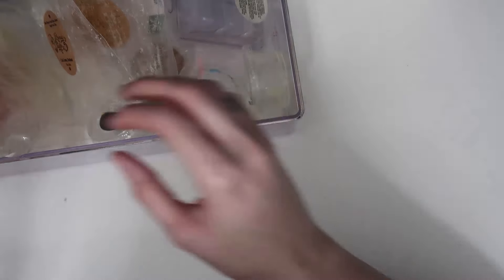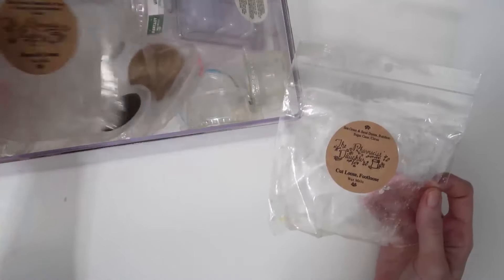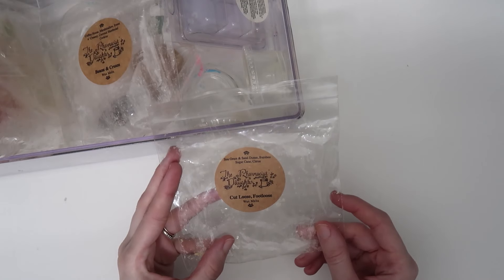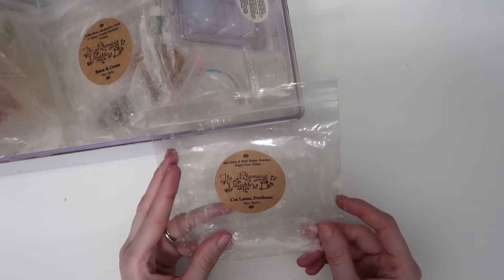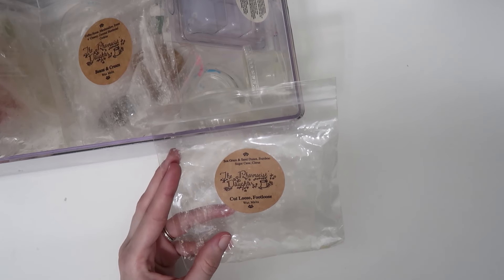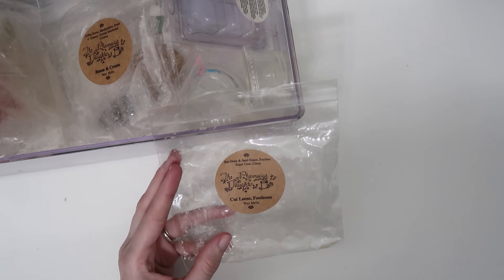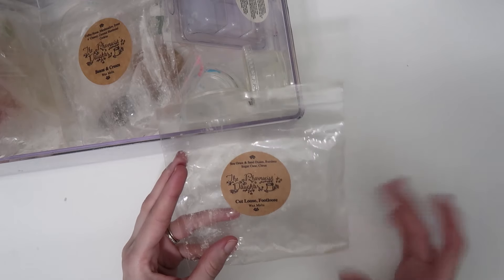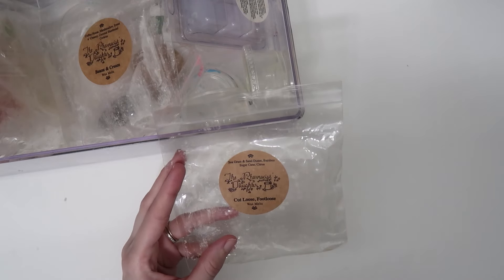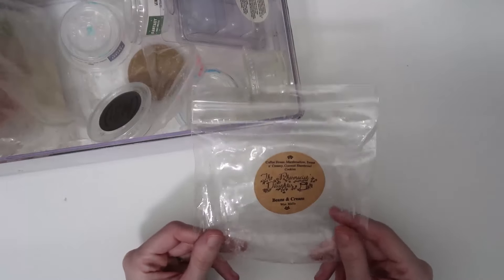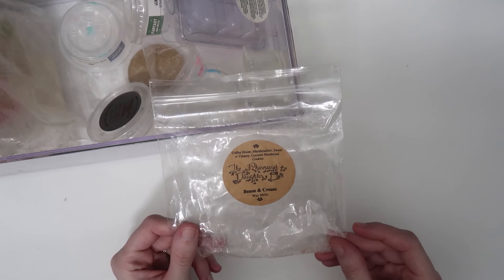From The Pharmacist Daughter I had two different scents. First one is Cut Loose Footloose - seagrass and sand dunes, bamboo, sugar cane, and citrus. This was a very light, fresh scent. Very nice for our downstairs area. It didn't throw too crazy but it was refreshing. Not something I would repurchase but I liked it for what it was.